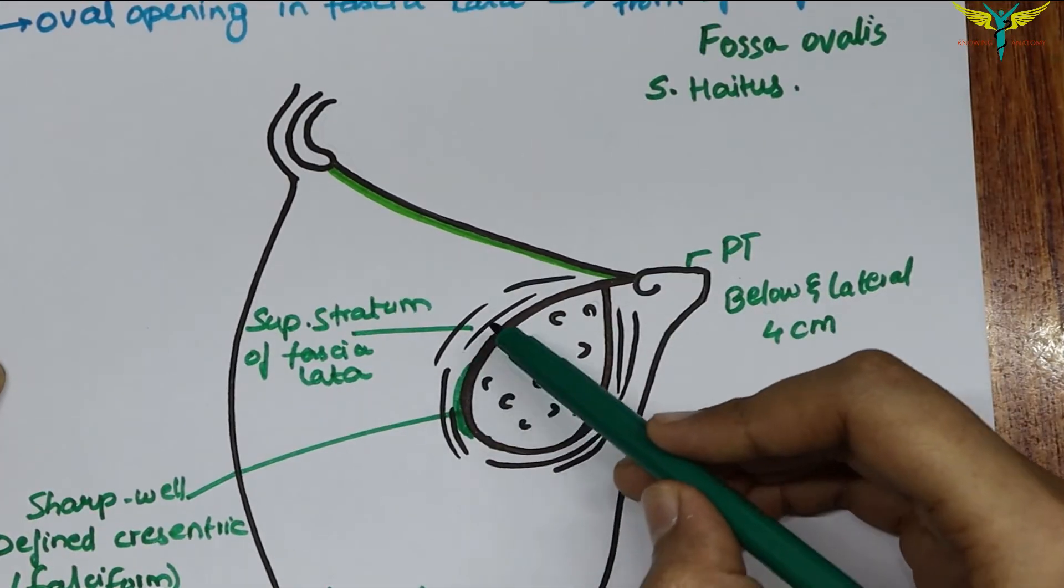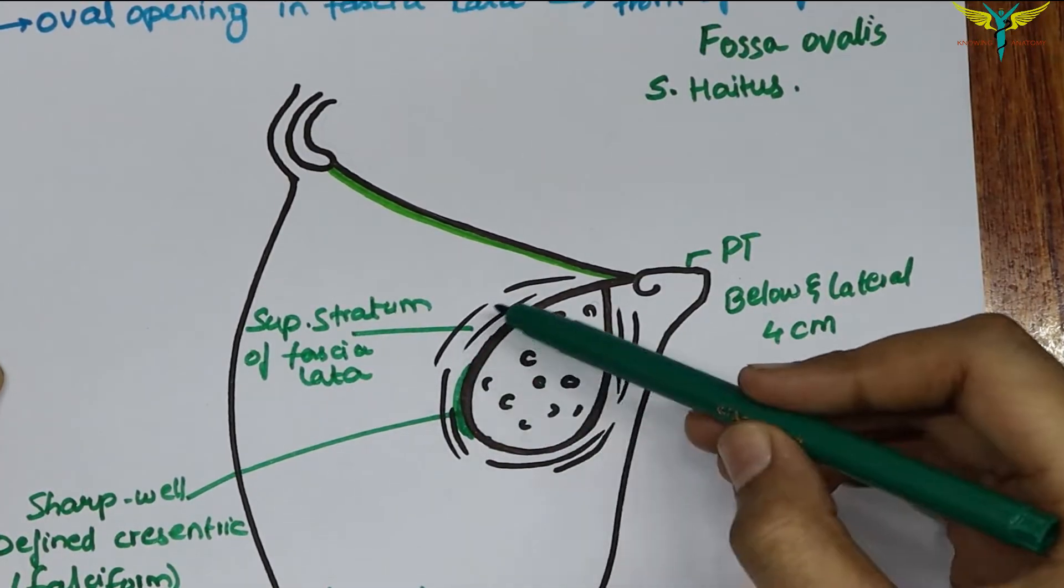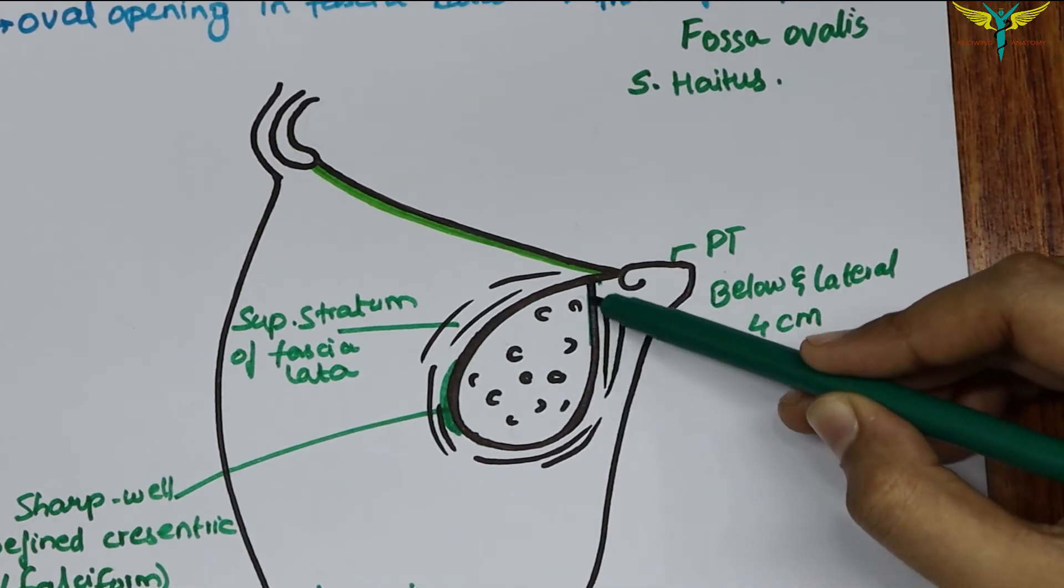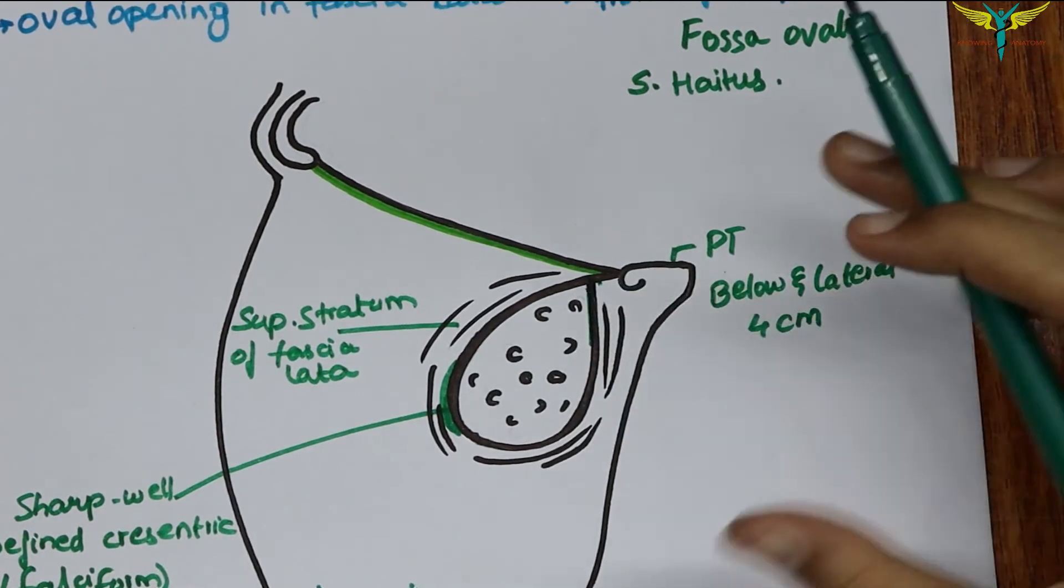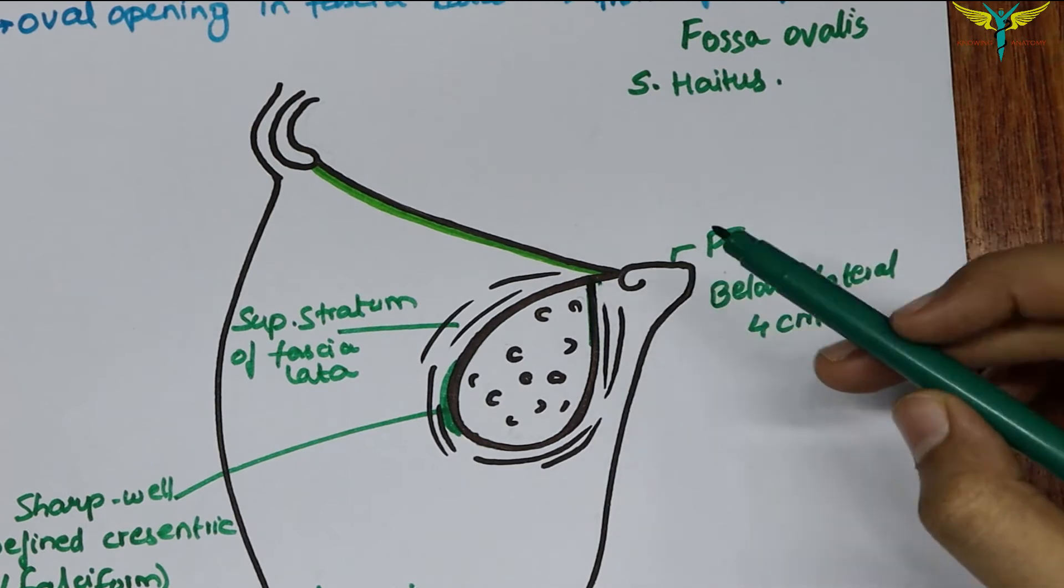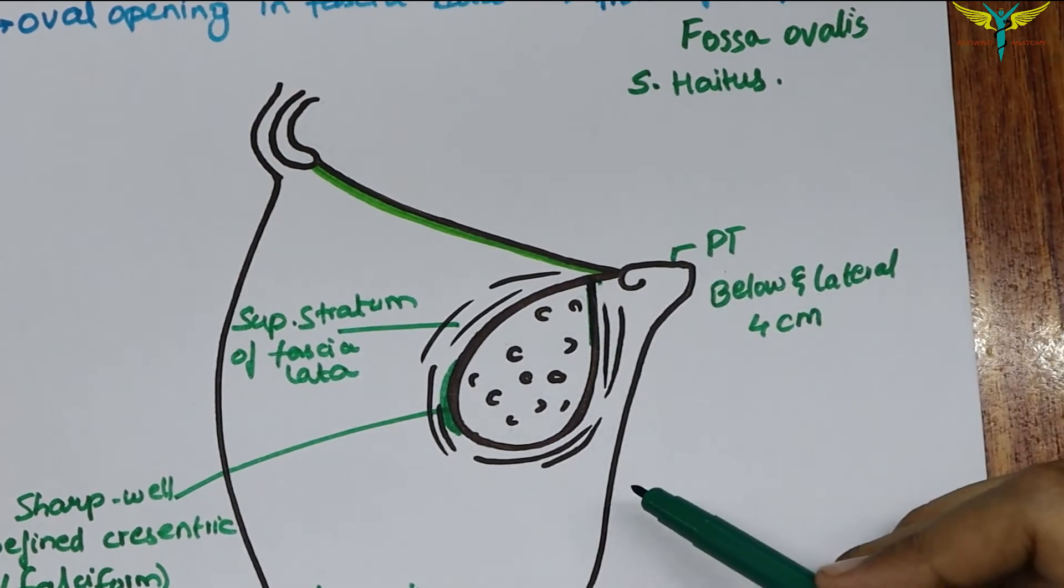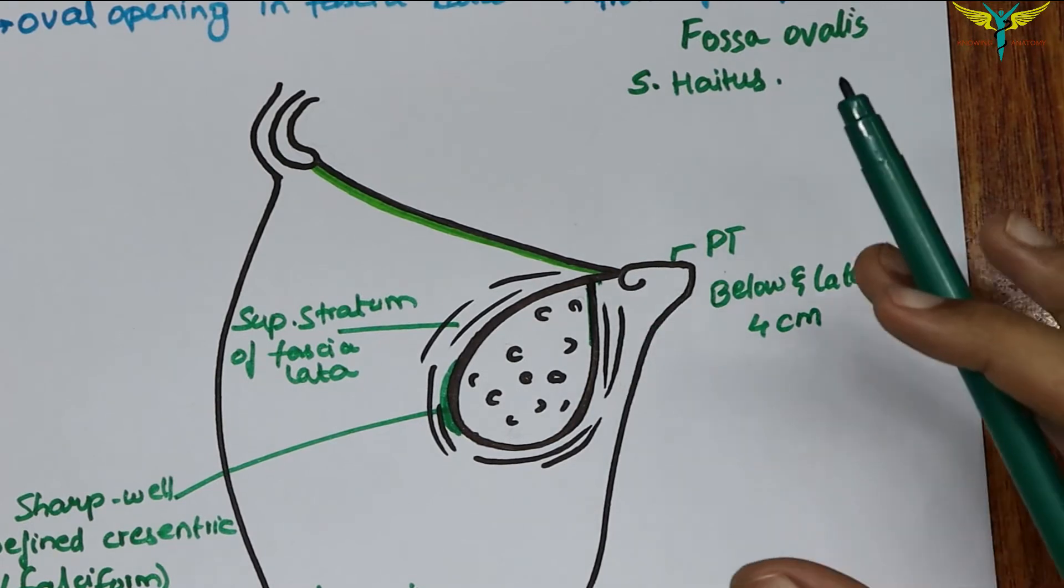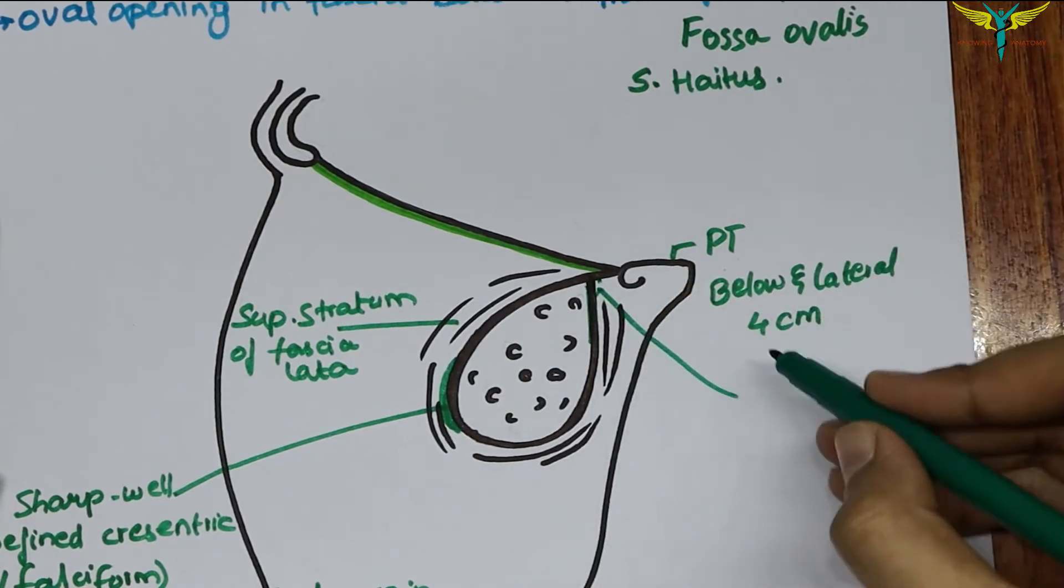This superficial stratum of the fascia lata lies in front of the femoral sheath. The medial margin of the saphenous opening is ill-defined and it is formed by the deep stratum, which lies at a deeper level and becomes continuous with the fascia over the pectineus muscle.